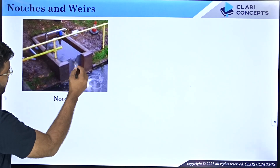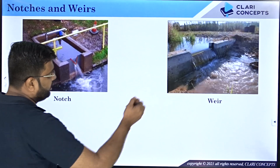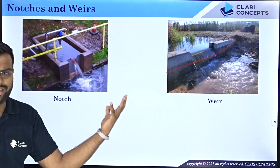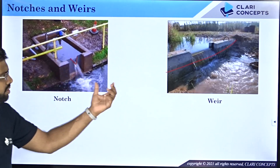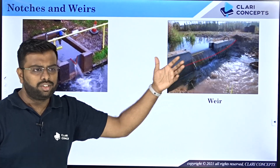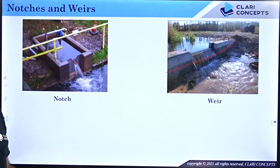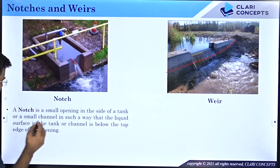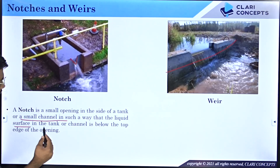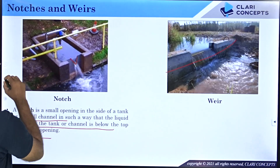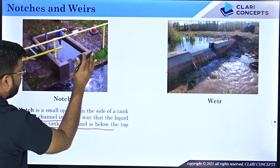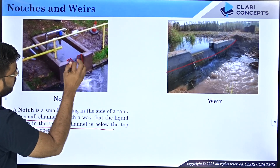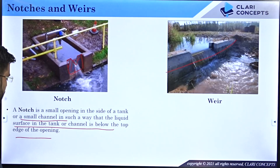A notch — you can see a V-notch here — and a weir looks like this: a masonry or concrete structure. A notch is a small opening in the side of a tank or small channel such that the liquid surface is below the top edge of the opening. The notch is essentially a metallic plate, and all the water flows through it up to a certain height from the base. By measuring that height, you can determine the flow rate.